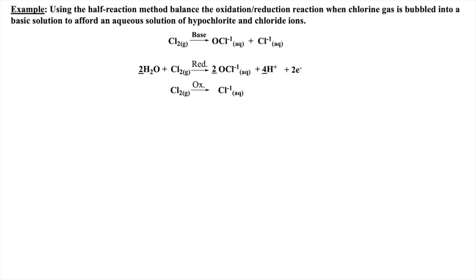Let's repeat these steps to the oxidation half reaction. First, the element being oxidized — chlorine — needs to be balanced, and there are no oxygens, so I don't have to add water molecules or protons to balance, which leaves equating the charges by adding two electrons to the reactant side.